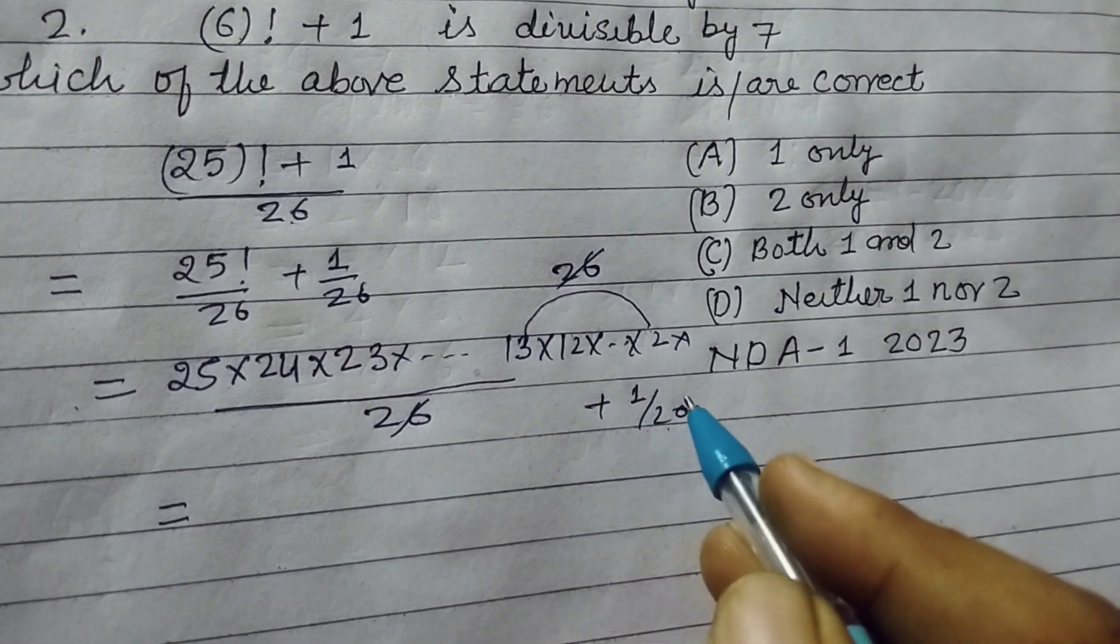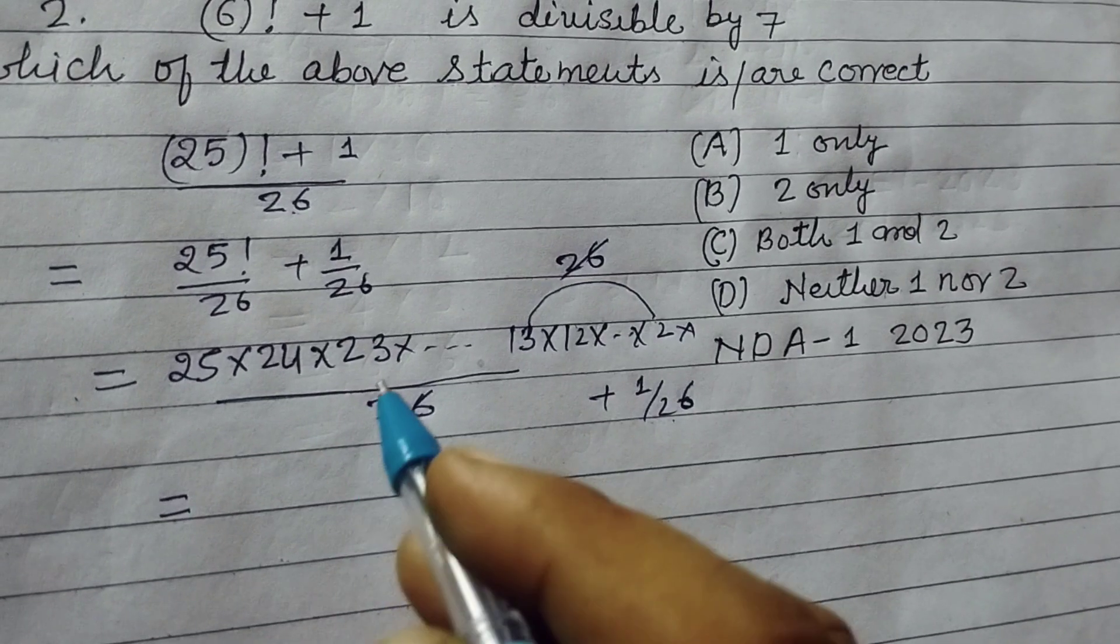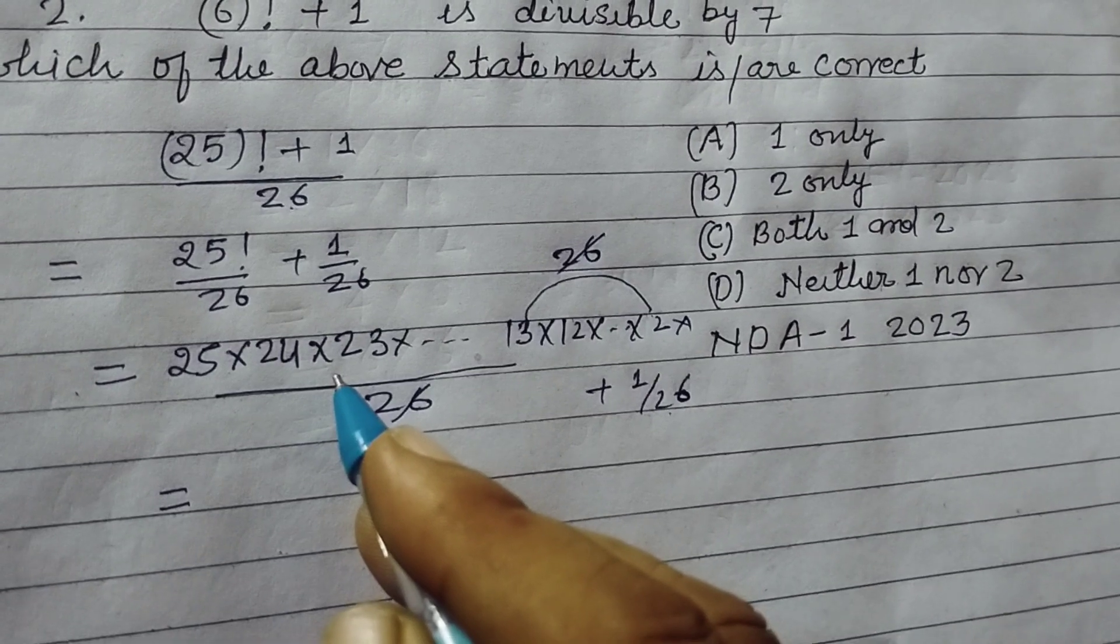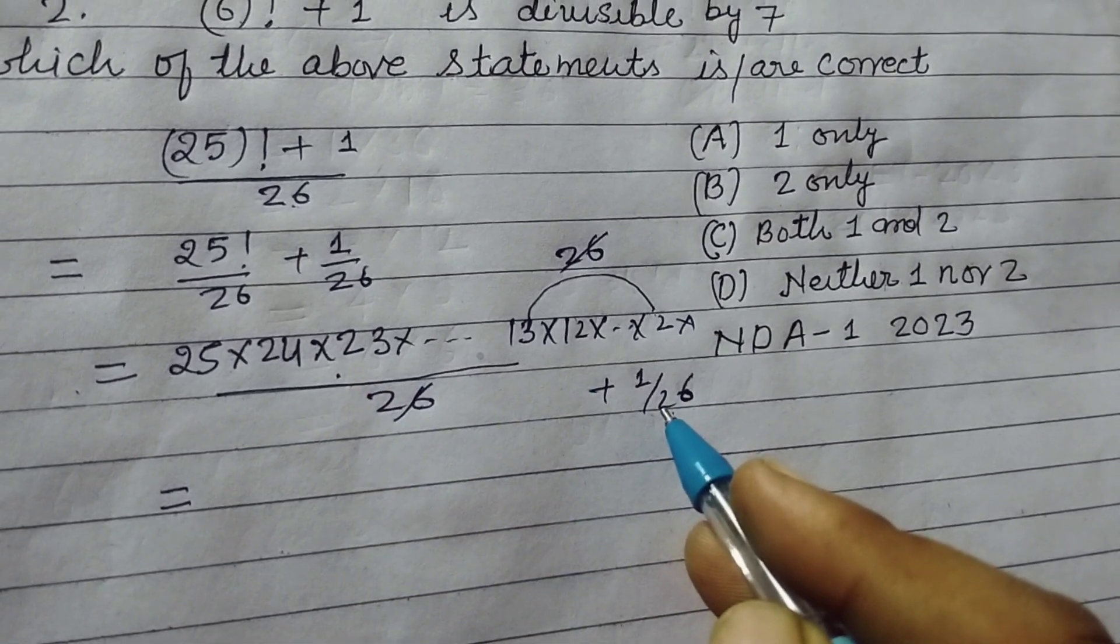But 1 is not divisible by 26, therefore total number is not divisible by 26. This part is divisible by 26, but it is not divisible by 26.